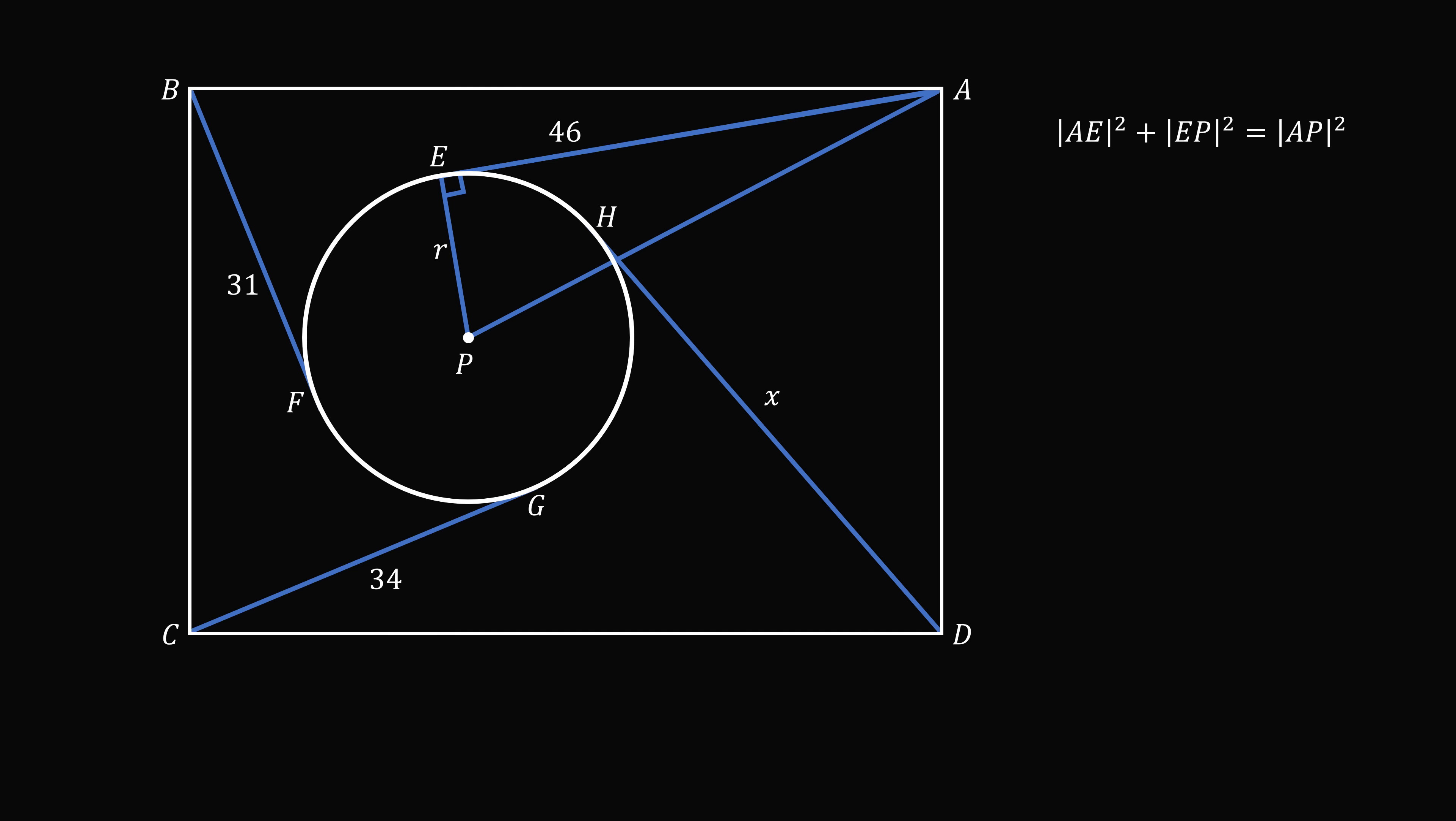Let the radius of the circle be equal to R, so that EP is equal to R. Substituting in, we have 46 squared plus R squared is equal to AP squared.